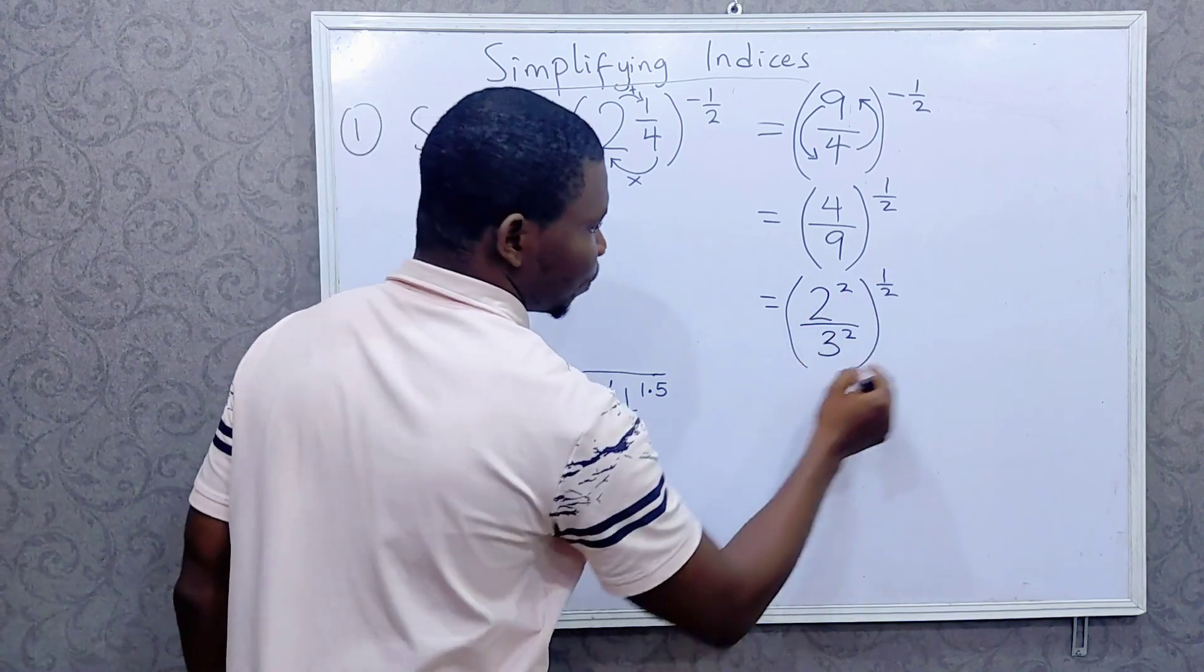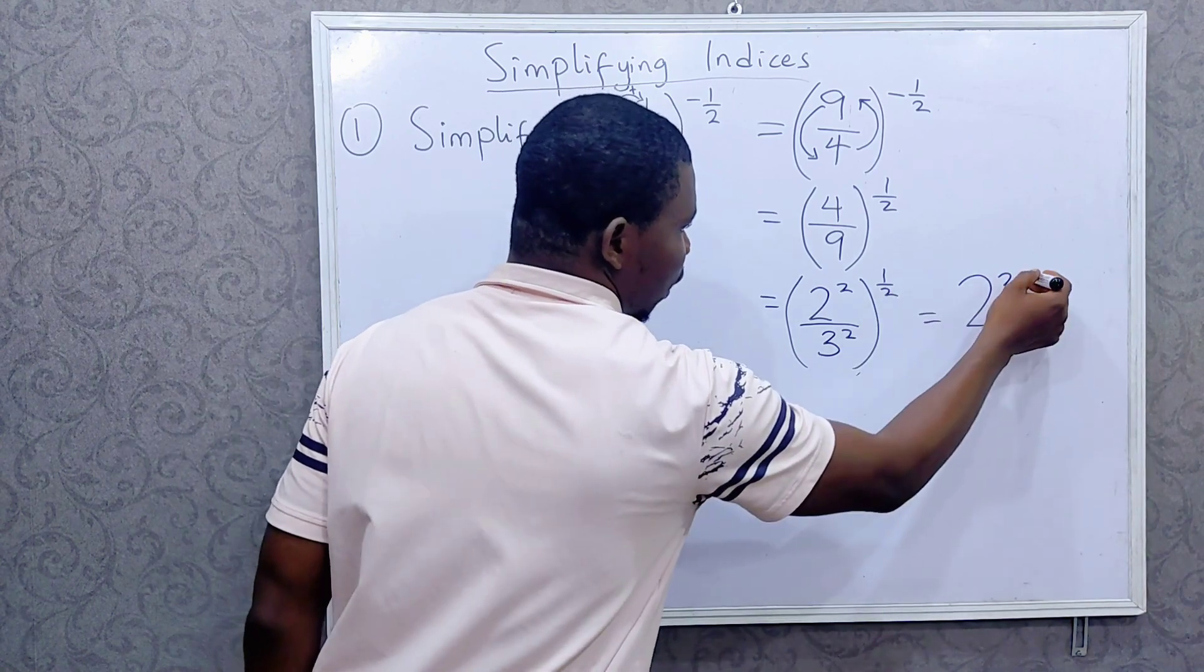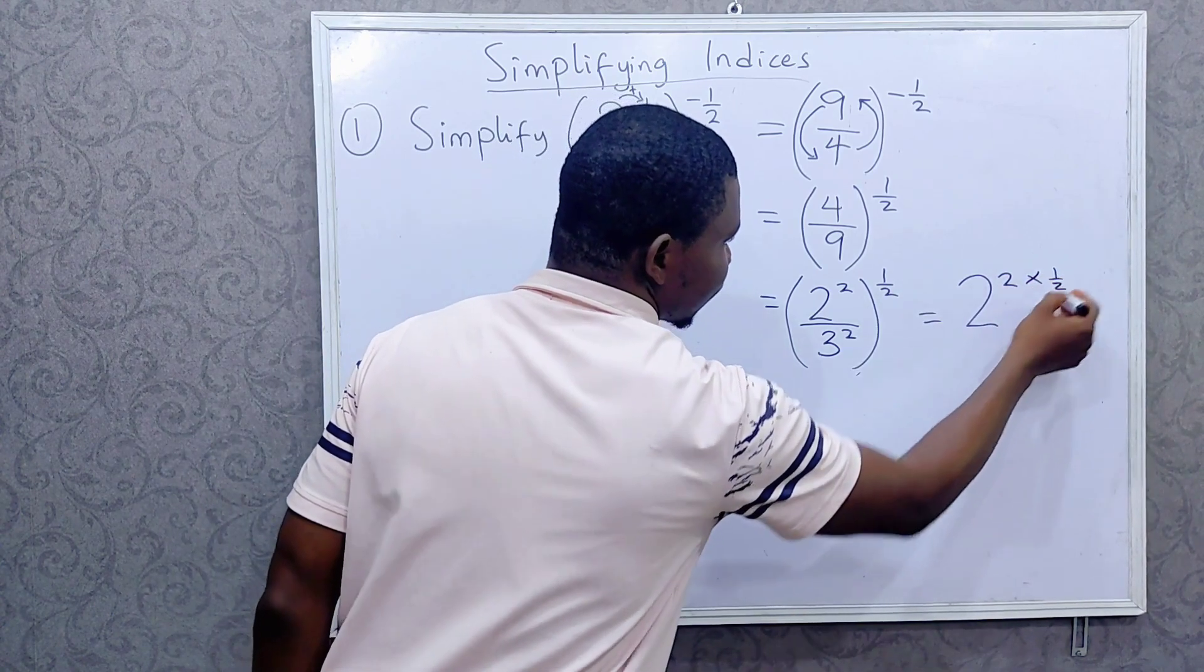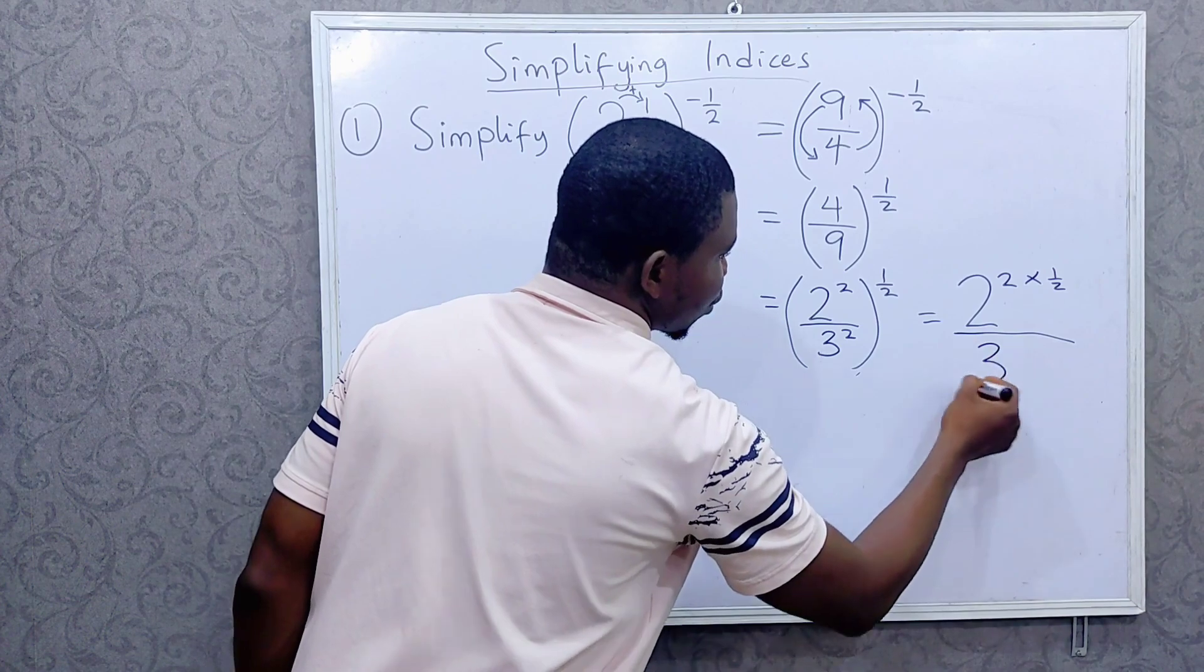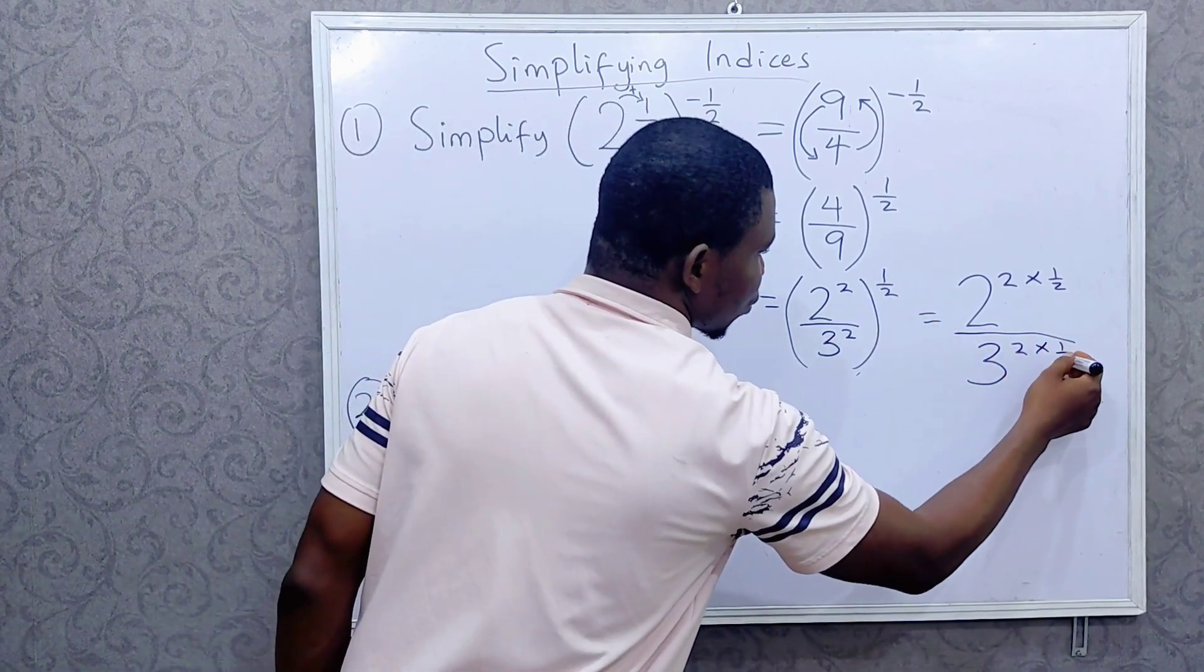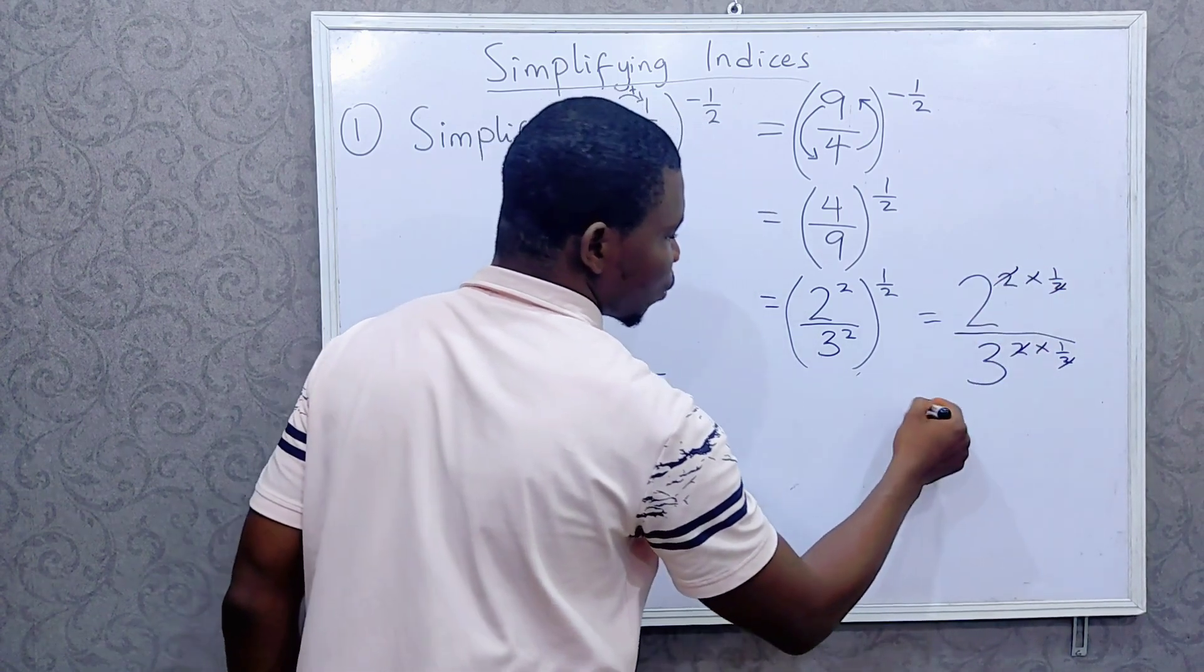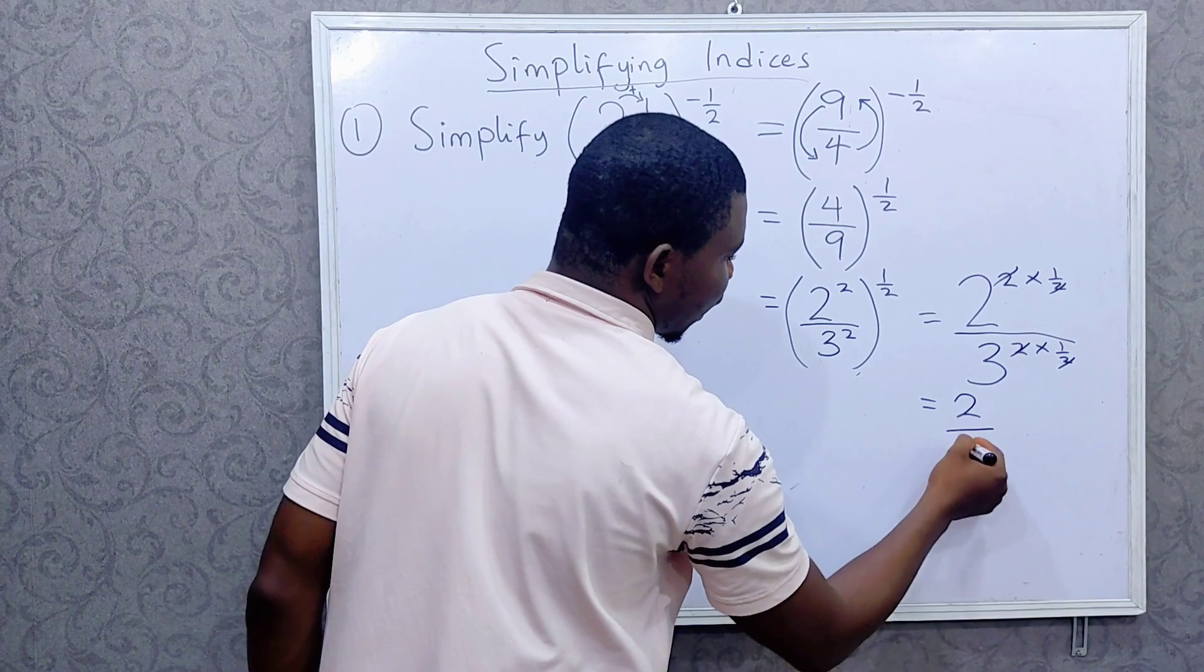So this power, I can write this as 2 raised to power 2, then times this power, times 1 over 2, over 3 raised to power 2 times this power, 1 over 2. This will cancel, this will cancel. So I'm left with 2 over 3.